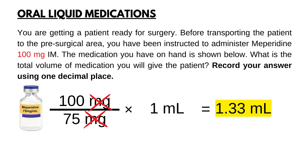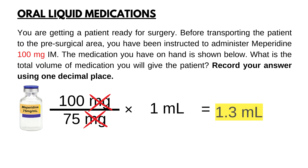Now, round it to one decimal place. When you round to the first decimal place, or to the nearest tenth, the number in the hundredths place will determine whether you round up or down. If the hundredths digit is a number between 5 and 9, round up. If it is a number between 0 and 4, you would round down by keeping the tenths place the same. The hundredths digit is 3 in this answer, so you will round down by keeping the tenths place the same. The final answer is 1.3 ml.